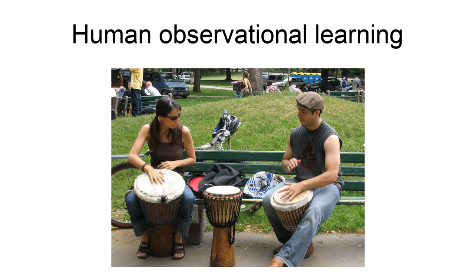The Bobo doll experiment shows that the model, in a determined environment, affects children's behavior. Bandura demonstrates that one group of children placed in an aggressive environment would act the same way, while the control group of children placed in a passive role model environment hardly showed any type of aggression.